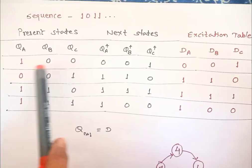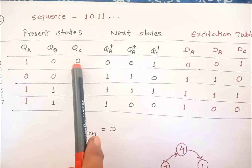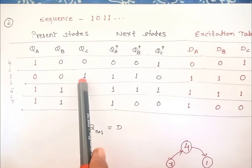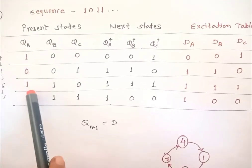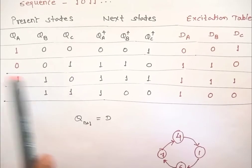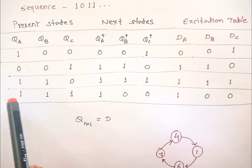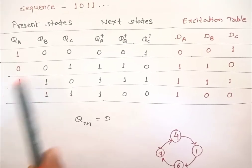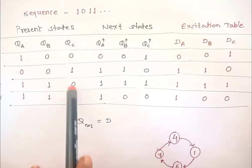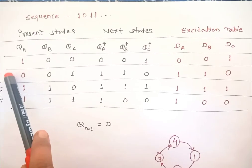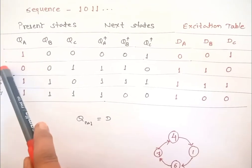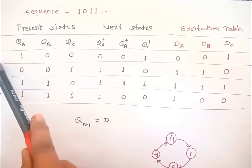For example, putting 00 under QB and QC gives the state 100, which is decimal 4. Putting 01 gives 001, which is decimal 1. Putting 10 gives 110, which is decimal 6. Putting 11 gives 111, which is decimal 7. While writing these combinations, you may choose any combinations, but the decimal numbers must not be repeated. So the sequence goes: 4 → 1 → 6 → 7, and it repeats.